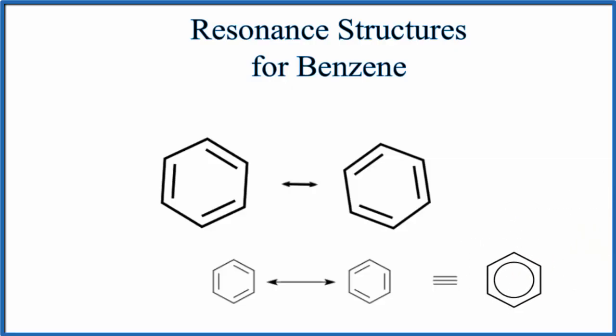One last thing to note. People often ask whether these are isomers as well. They are not isomers. Isomers have a different arrangement of the atoms. Here, the carbons and the hydrogens, they're all in the same places. They haven't changed. It's the electrons, the delocalization of the electrons, that is represented differently in each of these structures.